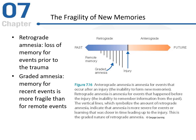Now we'll take a look at something called graded amnesia. This is looking at memory for recent events, and what we find with a fair number of patients is that memory for more recent events — events that occurred fairly close in time to the actual injury or trauma — tend to be more forgotten than ones that are further back in time from the injury or trauma point. So events further back in time would be more likely to be remembered, whereas events closer to the injury would be less likely to be remembered.